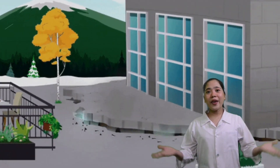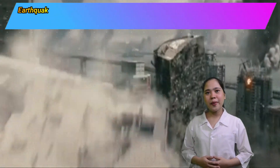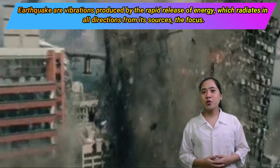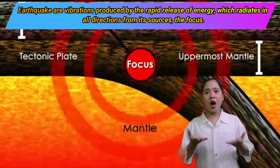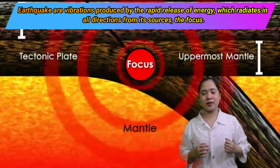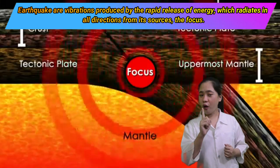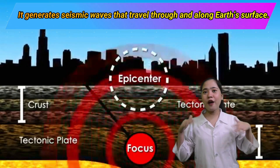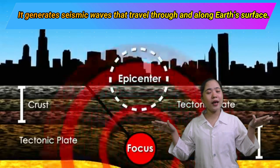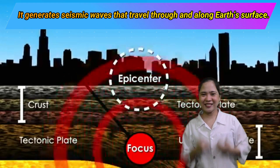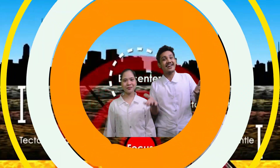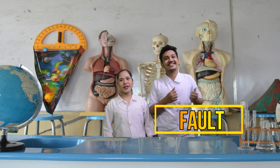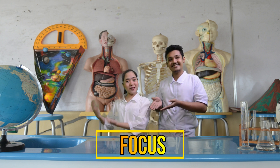Earthquakes are vibrations produced by the rapid release of energy which radiates in all directions from its source, the focus. It generates seismic waves that travel through and along Earth's surface. Now, let us define fault, focus, and epicenter.